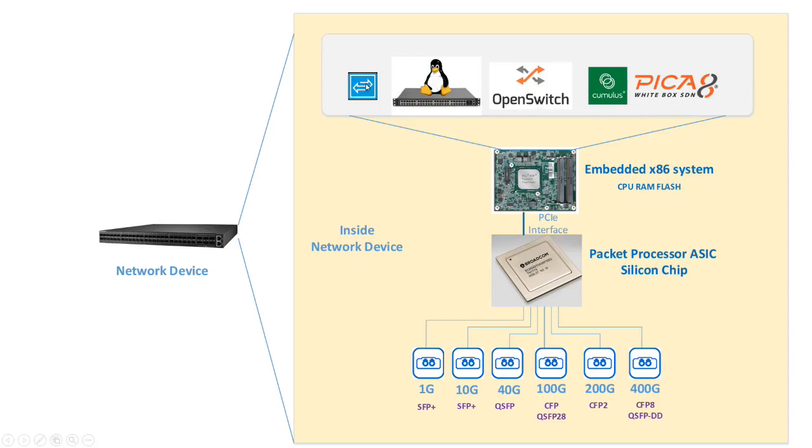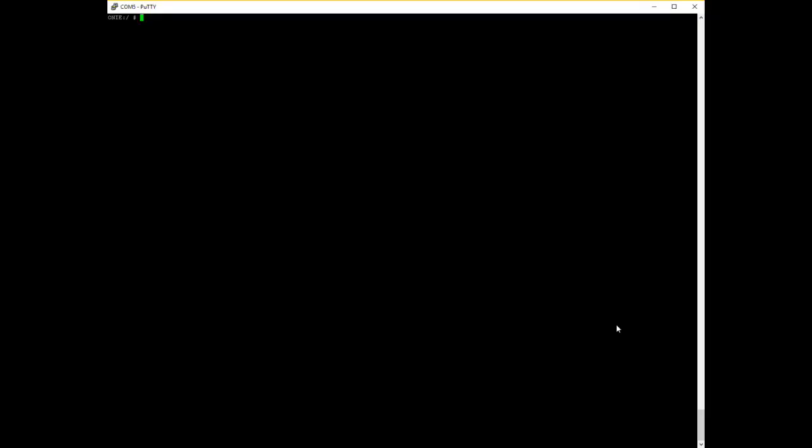You can also install Open Network Linux or even Big Switch Networks' Switch Light. Let's now have a look at ONIE — the Open Network Install Environment. I have connected a console to the switch and will power it up to see what appears on screen.